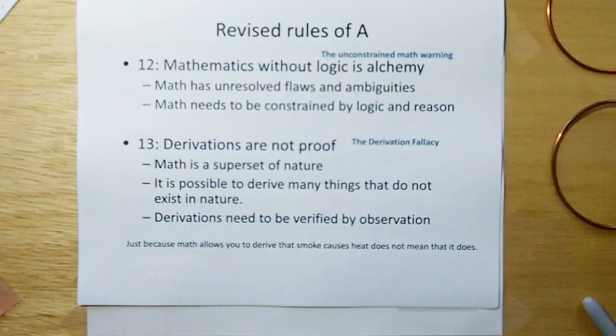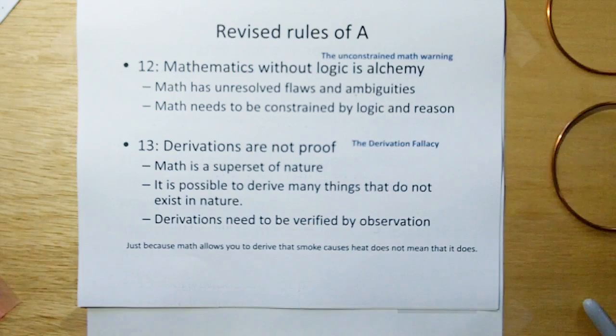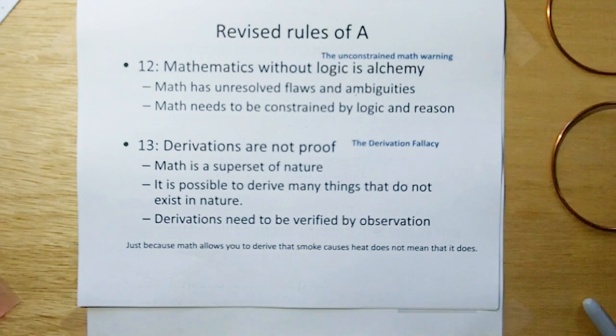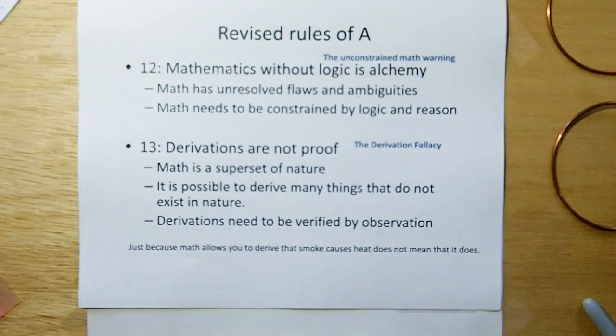And I've seen this a lot in engineering where young engineers will come in and just start throwing down equations and massaging them and assuming that if they get this, it must be the right answer because they did all the math right. And that's why we have the new rule of acquisition 13. Derivations are not proof because math is a superset of nature. It's possible to derive many things that don't exist in nature. I mean, math allows you to have over-unity in parallel dimensions and infinity where it's possible that nothing is infinite and that over-unity doesn't exist. So just because you can derive it doesn't mean it exists.